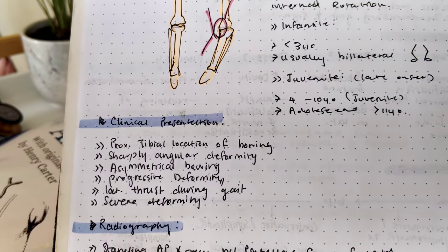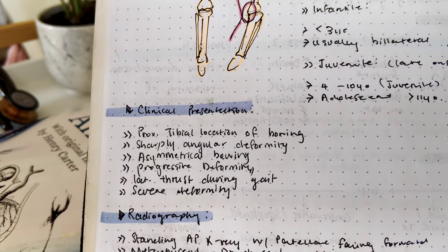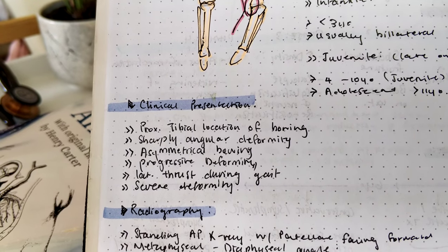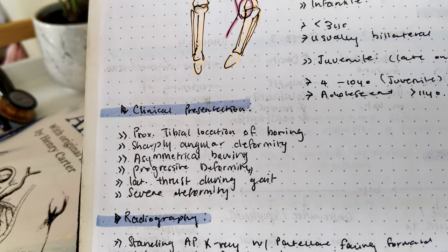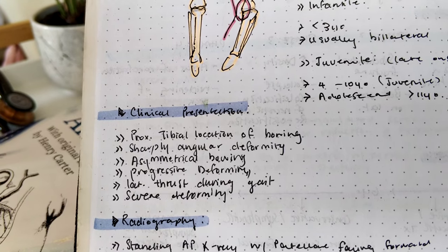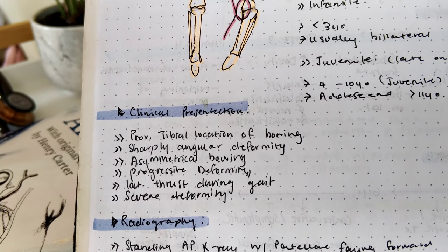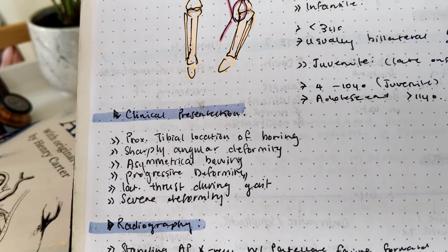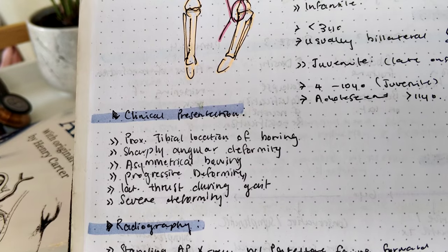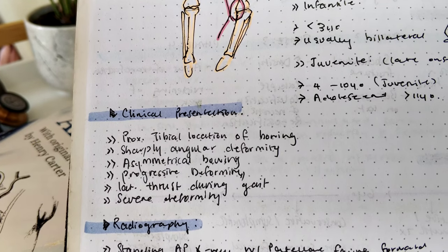Under clinical presentation, patients usually present with proximal tibial location of bowing, sharply angular deformity, asymmetrical bowing, progressive deformity, lateral thrust during gait, and sometimes these can lead to severe deformities.